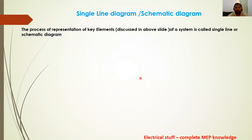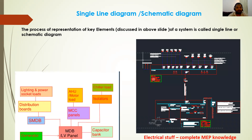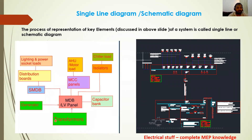A single line diagram is a schematic representation of the key elements of a system. This entire process needs to be drawn to understand how power is distributed from one end to another. In the schematic, we have a transformer feeding the main distribution panel through cables, which are then distributed to the sub-main distribution panels.